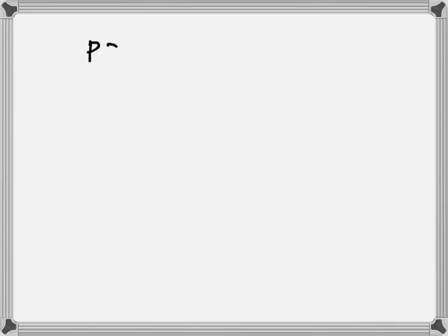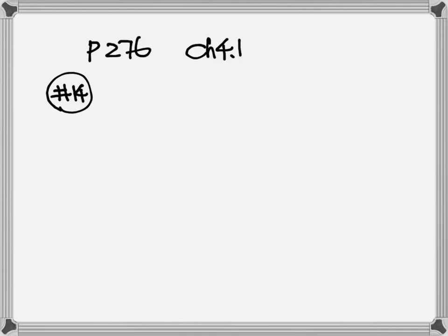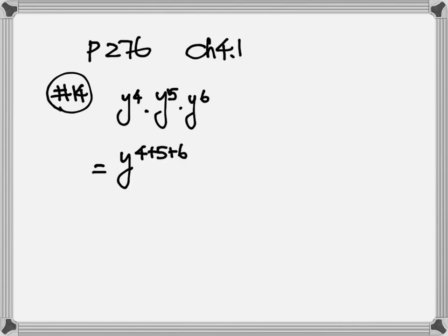Okay, page 276, section 4.1. Let's look at number 14. Here we have y to the fourth power times y to the fifth power times y to the sixth power. So here we multiply a whole bunch of y. We call the y the base. When the bases are the same, you just write down one base — so you just write down one y. Then you combine all the exponents.